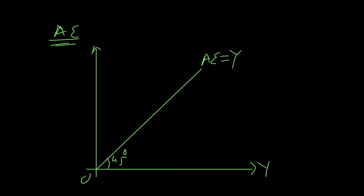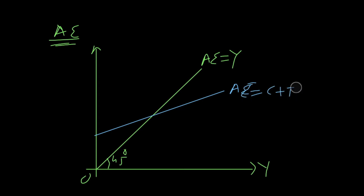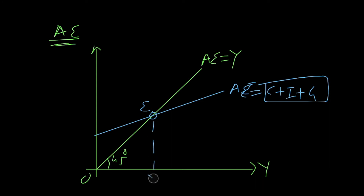In reality, aggregate expenditure is not equal to income all the time. Aggregate expenditure in three sector economy is equal to C plus I plus G, where C stands for consumption, I for investment, and G is government expenditure. These three economic agents are represented by C, I, and G. Equilibrium takes place where the aggregate expenditure curve intersects the 45-degree line at point E, giving equilibrium national income Y1.